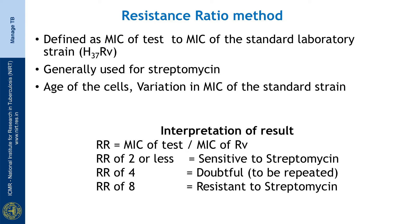Next, we come to the resistance ratio method, which is defined as the MIC of the test strain divided by the MIC of the standard laboratory strain H37Rv. This is generally used for streptomycin. Factors that could affect this method include the age of the cells — whether test strain or standard strain — and variations in the MIC of the standard strain due to repeated passages in the laboratory. When the resistance ratio (RR) is 2 or less, the strain is considered sensitive to streptomycin. An RR of 4 is considered doubtful and the test has to be repeated. An RR of 8 or more means the strain is considered resistant to streptomycin.